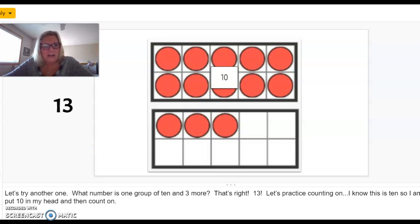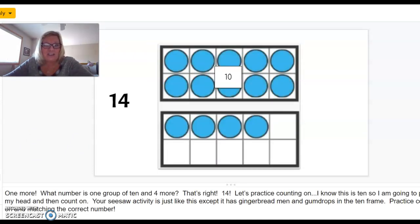Very good. Boys and girls, you just counting on. That is a math strategy. All right. One more. What number is one group of 10 and four more? That's right. Fourteen. Fourteen is one group of 10 and four more. All right. So, will you help me count on? Say 10 in your head. 10, 11, 12, 13, 14. Good job.